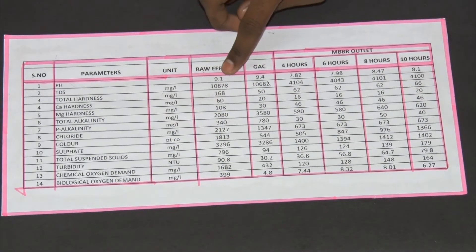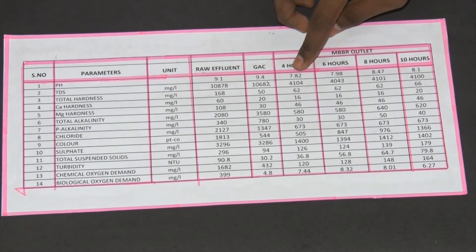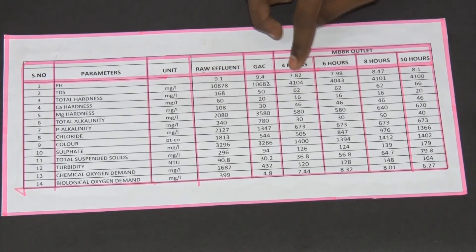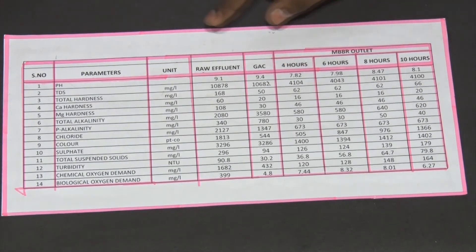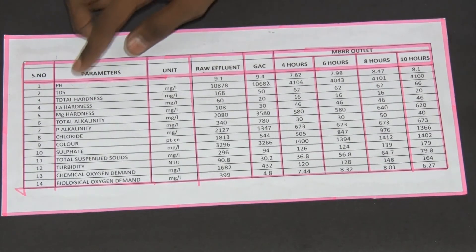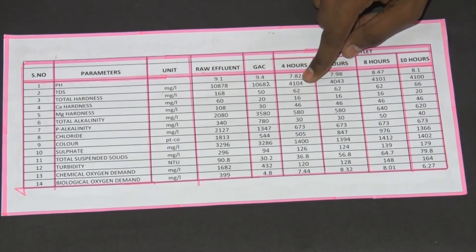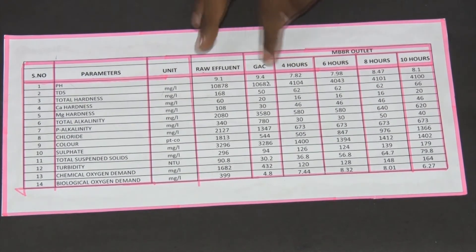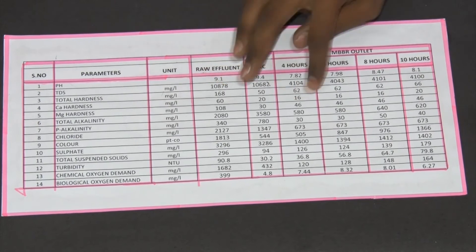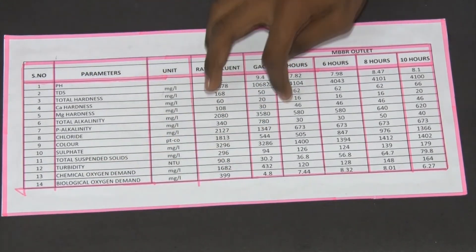In the raw effluent, the pH is 9.1. In the 4R sample, it is 7.82 — nearly equal to drinking water quality — which is why we plan to use it for irrigation. The TDS in the raw wastewater is 11,000, and after MBBR treatment it is reduced to nearly 4,000 — a 70% reduction. This is a major advantage of our product, and all parameters are within acceptable range.